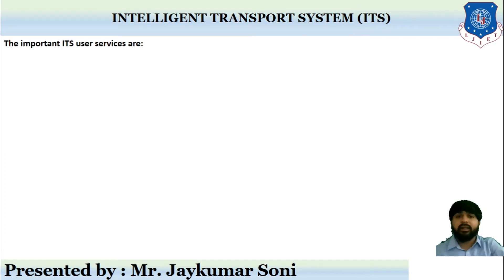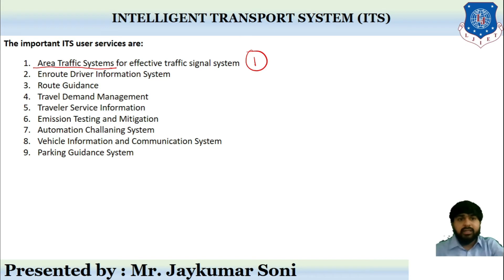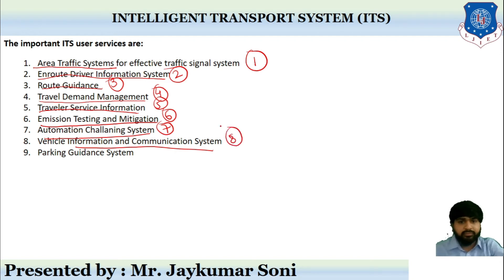The important intelligent transport system services include: first, the Area Traffic System for effective traffic signal management; second, En Route Driver Information System; third, Route Guidance; fourth, Travel Demand Management; fifth, Traveler Service Information; then Emission Testing and Mitigation; then Automation Challenging System; then Vehicle Information and Communication System; and finally Parking Guidance System.